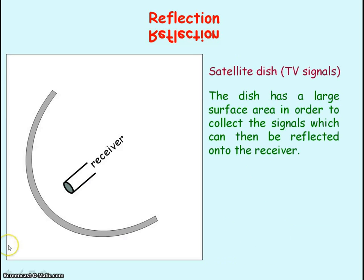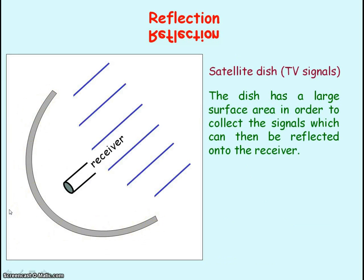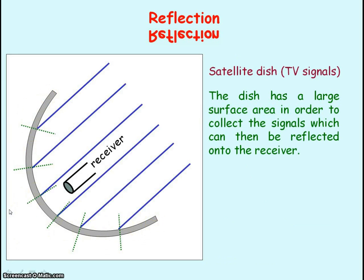A satellite dish has a large surface area in order to collect signals, and the surface is shaped such that all the rays hitting the surface will be reflected onto the receiver.